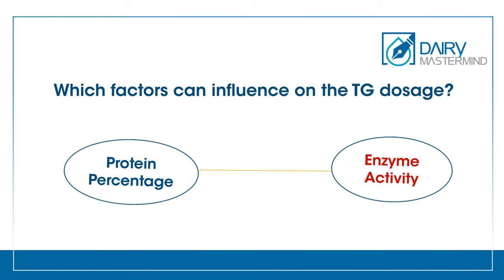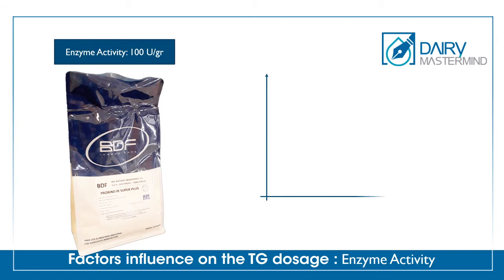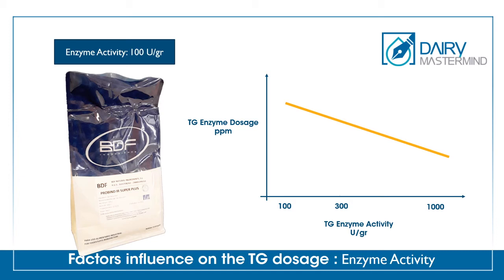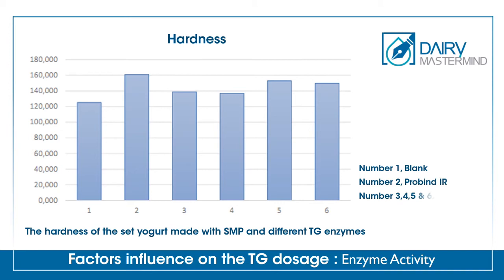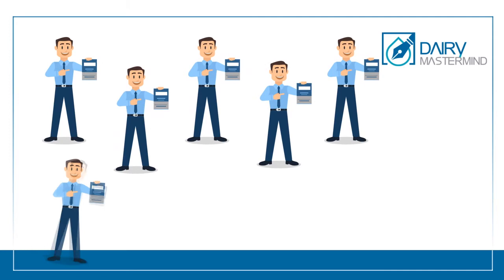The second factor is enzyme activity. There are currently TG enzymes with different activity levels on the market — for example, 100, 300 and 1000 units per gram. The higher the activity of the enzyme, the lower the required dosage. For TG enzyme with activity of 300 units per gram, about 50 ppm is used when the protein content is about 3%. The TG enzyme purity, activity, type and amount of carrier, and manner of mixing and packaging cause differences among brands and affect the texture of the final product. So choosing the right supplier is extremely important.